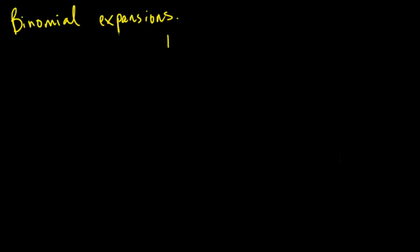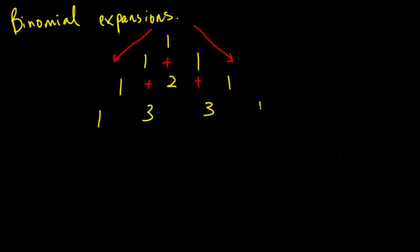If I have a number one here and I split that into two ones, then following this direction you always get one on the outside. One plus one on the top row gives me a two. For the next row I'll have ones on the outside, and then one plus two gives me three, and two plus one gives me three again, with one on the end. That's how you continue building and expanding the triangle.